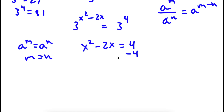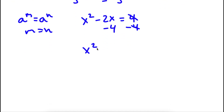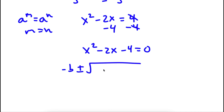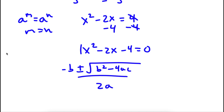Now to solve this, I subtract 4 from both sides, and I'm left with x squared minus 2x minus 4 is equal to 0. To solve this equation I'm going to be using the quadratic formula, which is negative b plus or minus the square root of b squared minus 4ac all over 2a. In this case, a is equal to 1, b is equal to negative 2, and c is equal to negative 4.